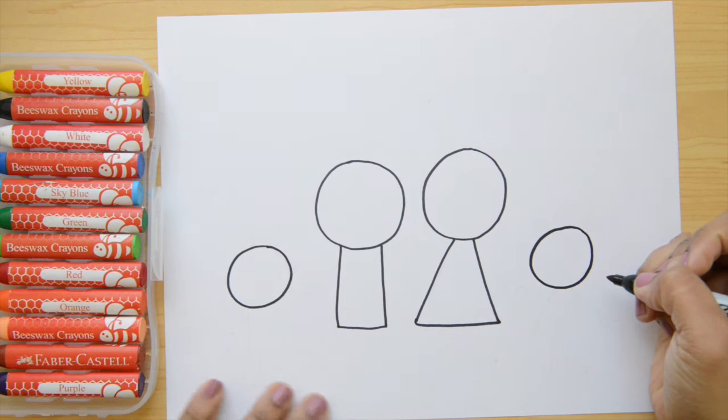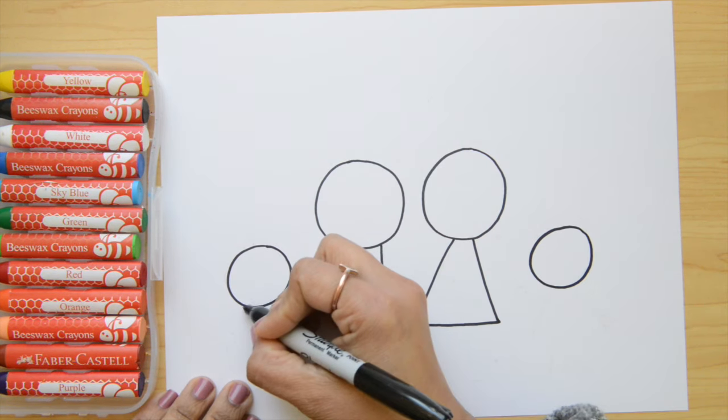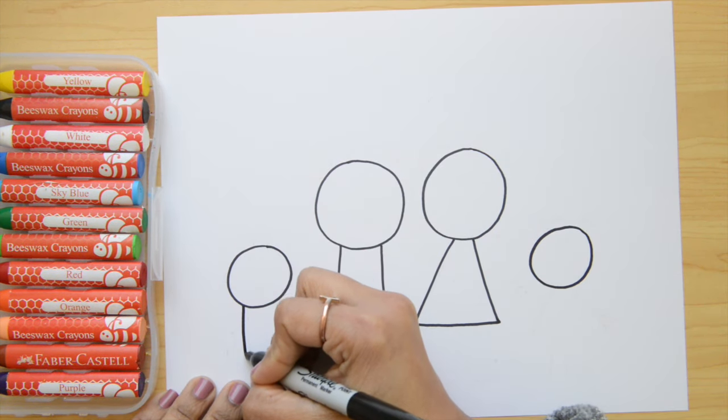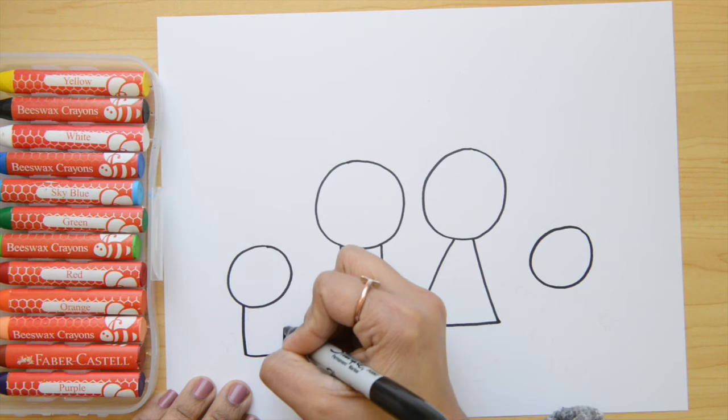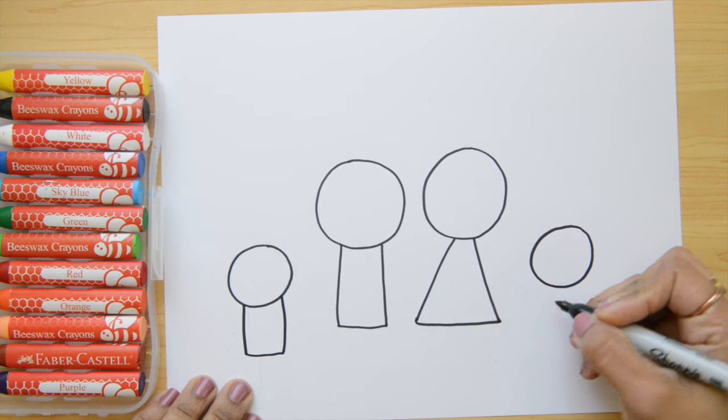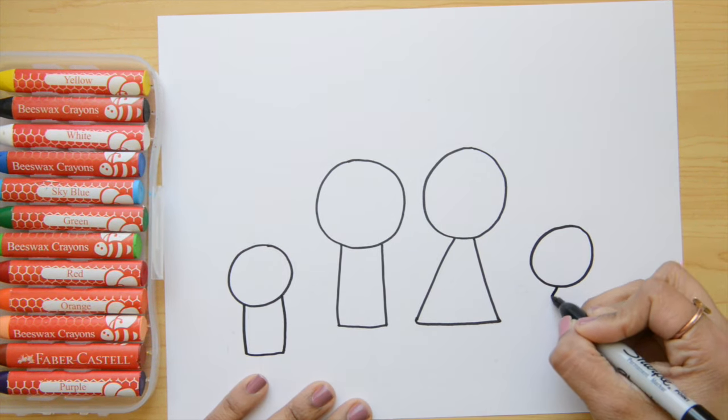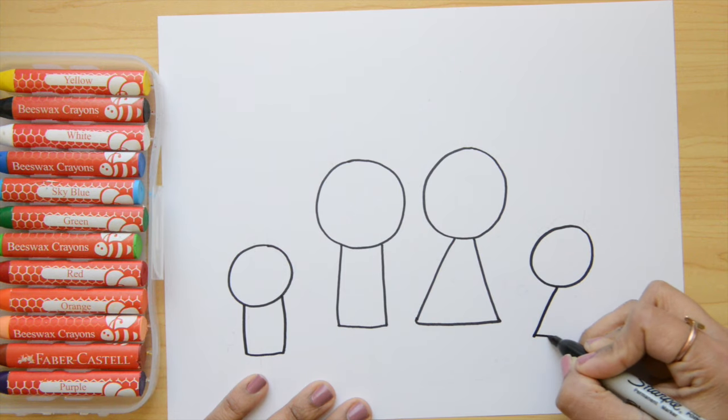And now let's do the body too. We're gonna do a rectangle shape here, down here. Like this. And for the girl, I'm doing a triangle shape. Just like that.